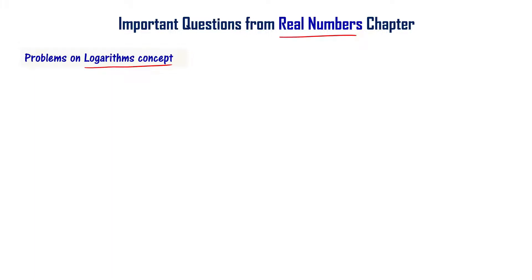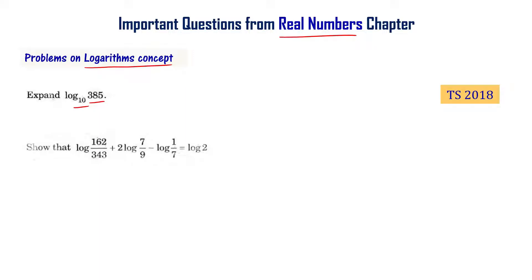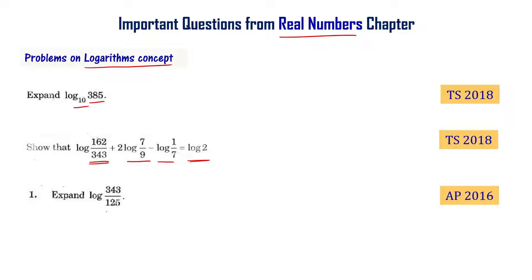Problems based on logarithms concept. Important topics include: expand log of 385 to the base 10, a question from Telangana final exam 2018; show that log of 162 divided by 343 plus 2 times log of 7 by 9 minus log of 1 by 7 equals log 2, also from Telangana final exam 2018; and expand log of 343 divided by 125, from AP final exam 2016. In this video I am going to solve all these problems.